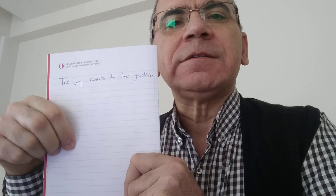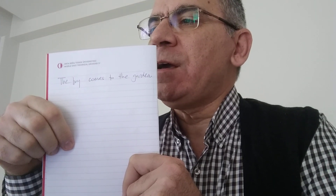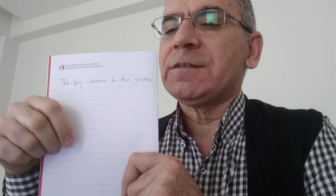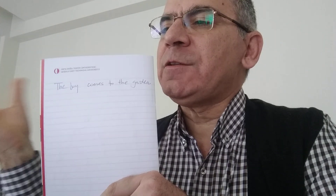The boy comes to the garden. We have two new elements here: the. What is the? The is an article. And what kind of article is it? We have two kinds of articles: definite and indefinite. The is a definite article, and a or an is an indefinite article.